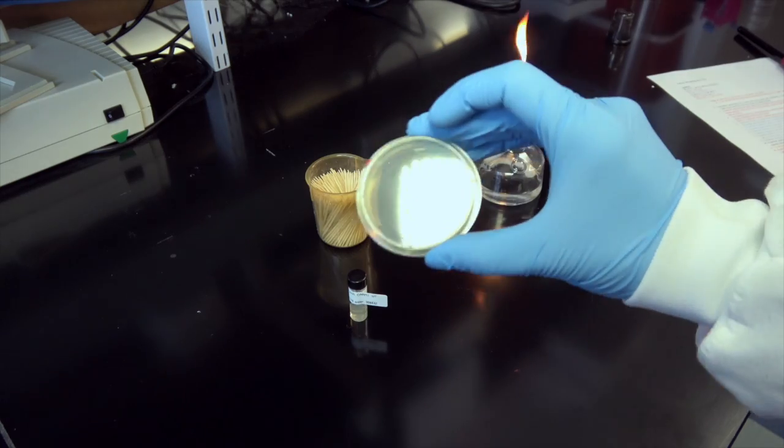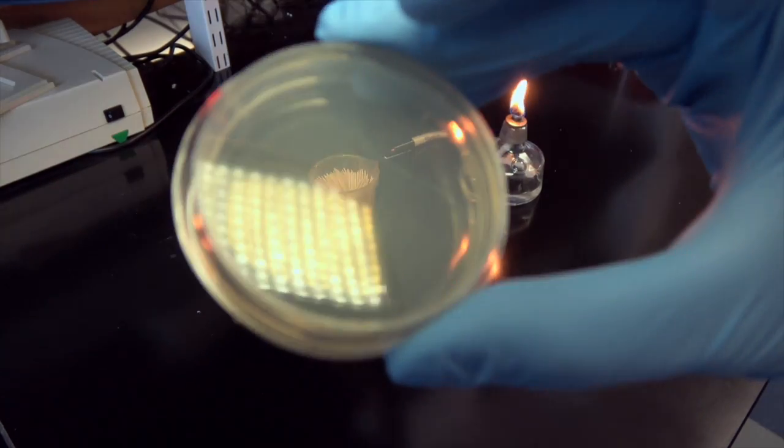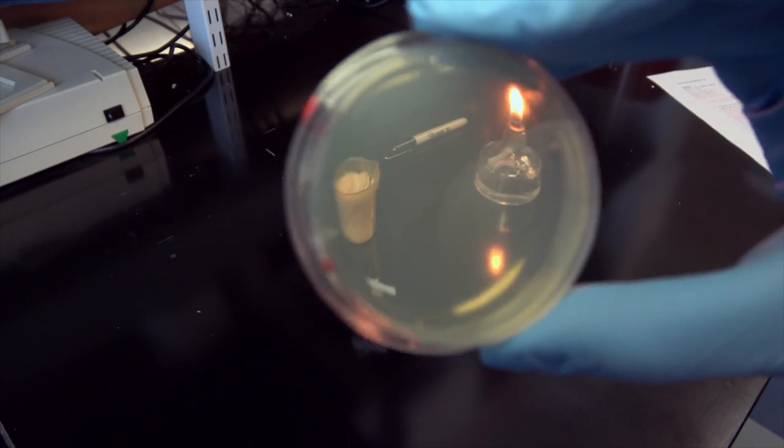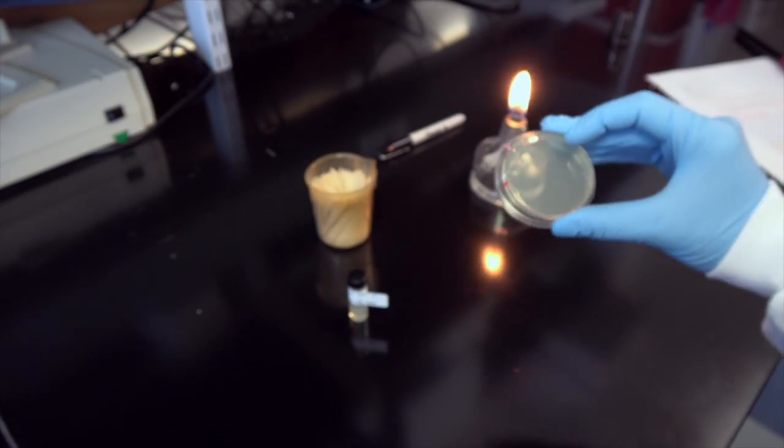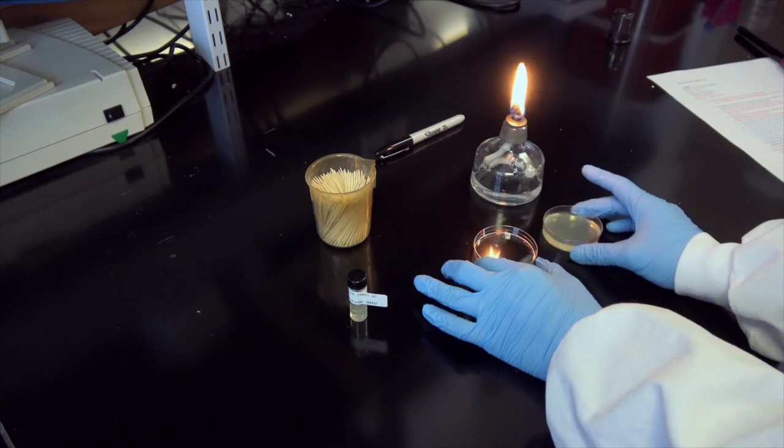First, we take out our LB agar plate with the appropriate antibiotic, making sure that there is no contamination on the plate and that it is dry. If the plate has condensation, you can place it next to a flame with the lid open for about 10 minutes to dry it out.